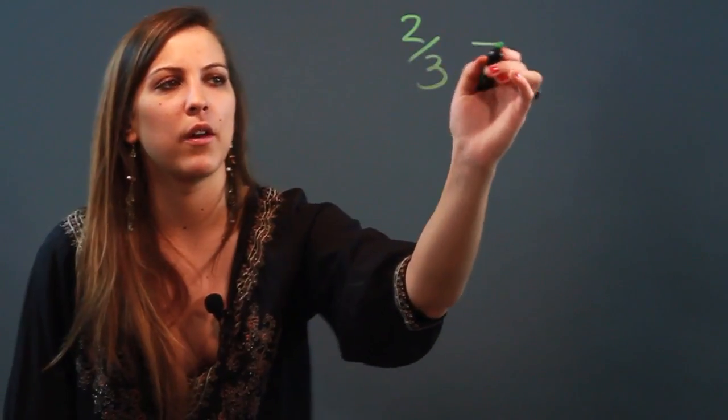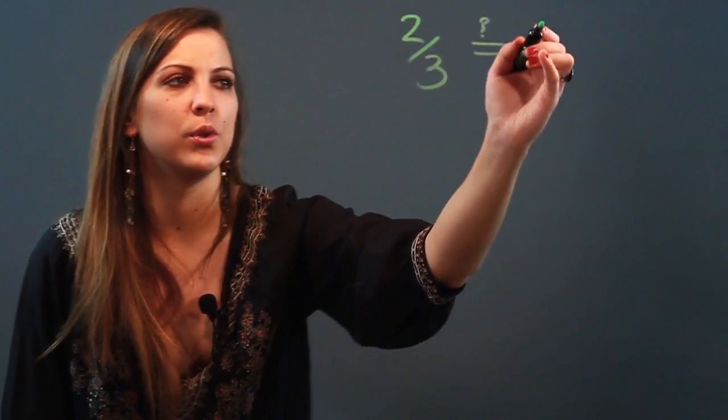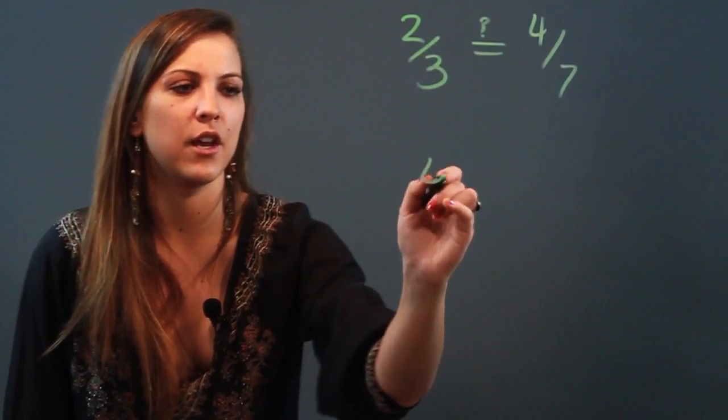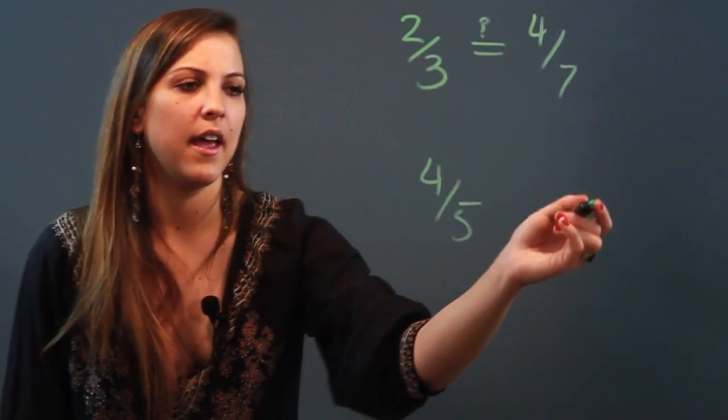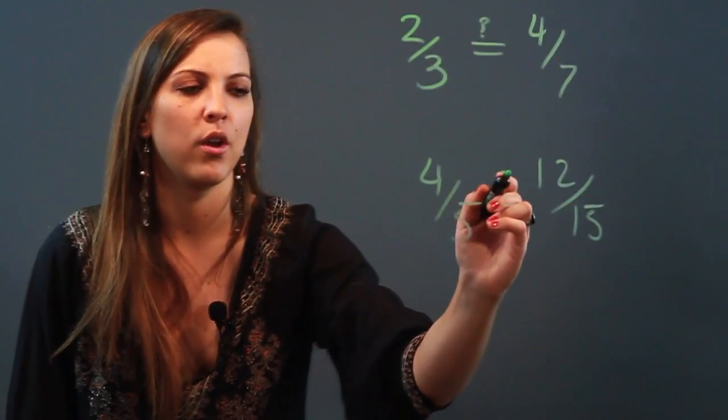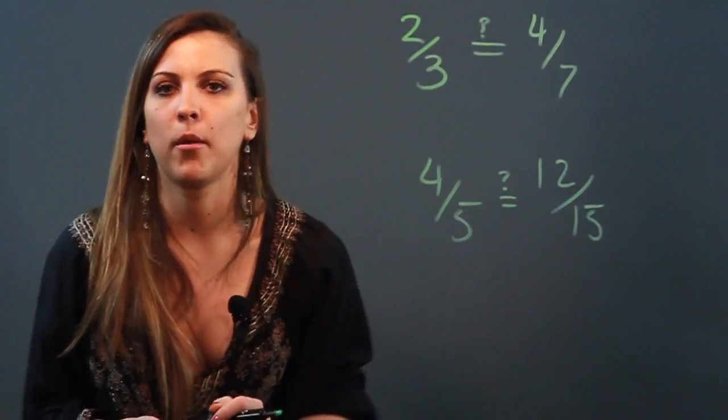So if you're given two sets of different ratios, let's use two-thirds, and we want to know whether or not it's equal to four-sevenths. And then we've got another pair, let's take four-fifths and twelve-fifteenths. We want to know which one of these two pairs is going to form a proportion.